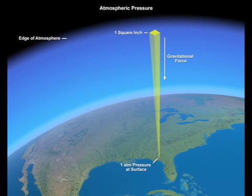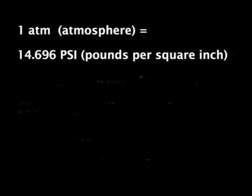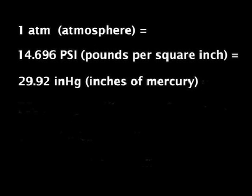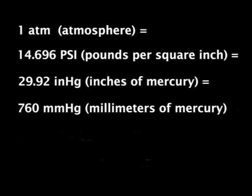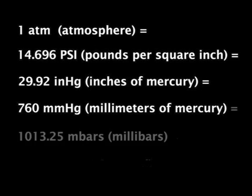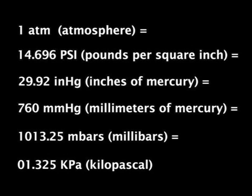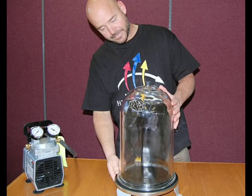That pressure comes from the miles of air molecules pressing down, thanks to gravity, on any given spot on the planet's surface. One atmosphere is equal to about 15 pounds per square inch, or 760 millimeters of mercury — that's the unit of measure used by our bell jar.